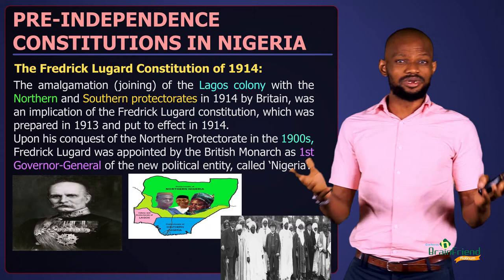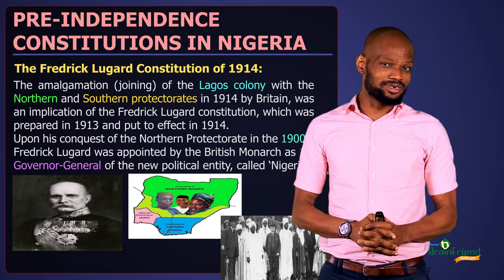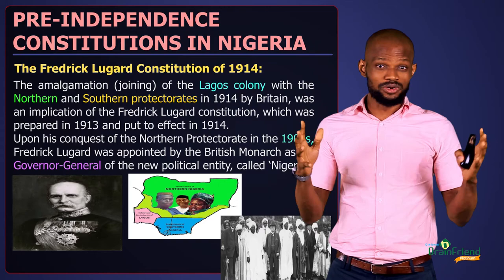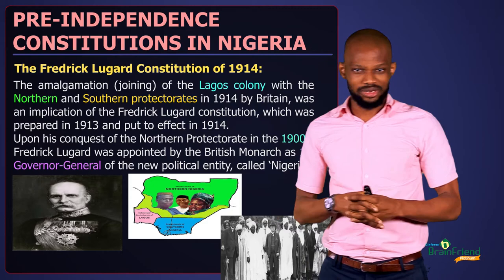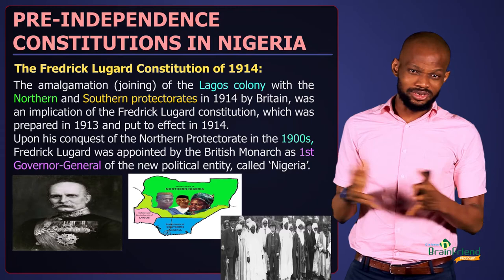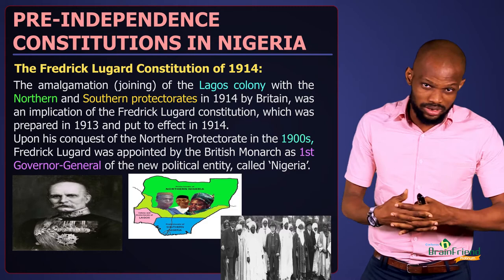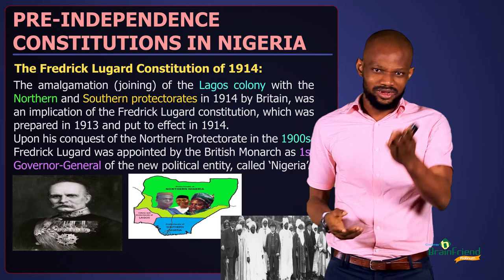The first of these constitutions is the Frederick Lugard Constitution of 1914. Prior to 1914, Nigeria was not called Nigeria — the region was known as the southern and northern protectorates. They were two distinct and different entities who did not see themselves as united, though from time to time they did interact with one another via trade and other means.